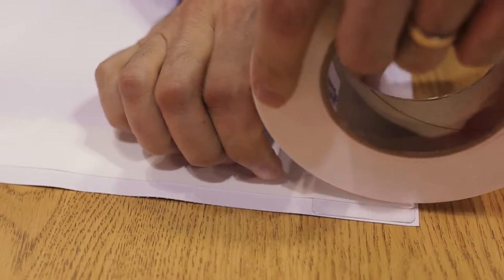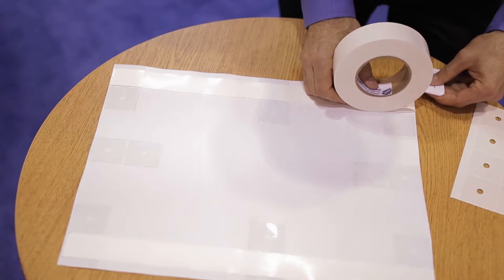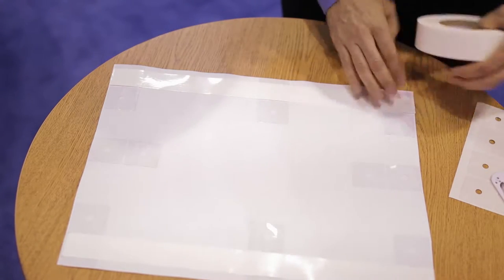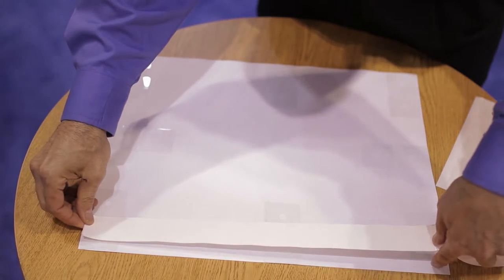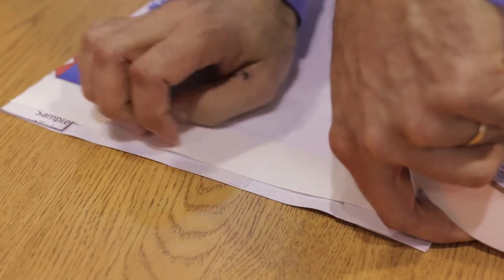Next, apply a strip of Mega Tape along the top and bottom edge of the banner. Apply it so that it lines up with the fold line in the tabs.